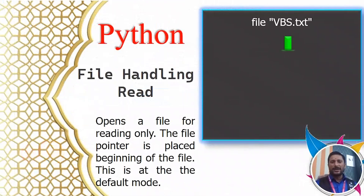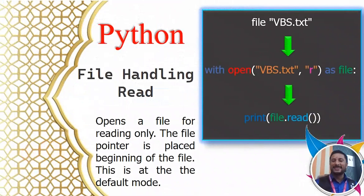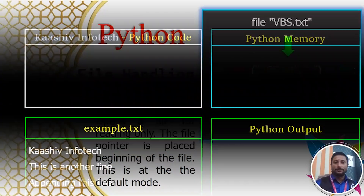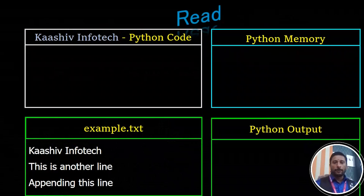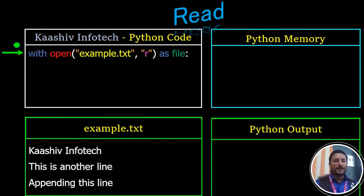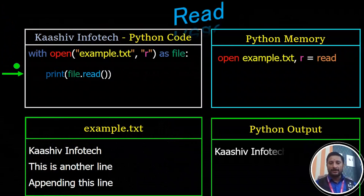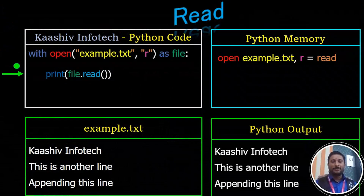Let's read the file. We need to read the file, and we can use file.readline() or file.read() to do so. It's called file.read() and you will see the Python output — you will see what is in the example text file, read automatically.